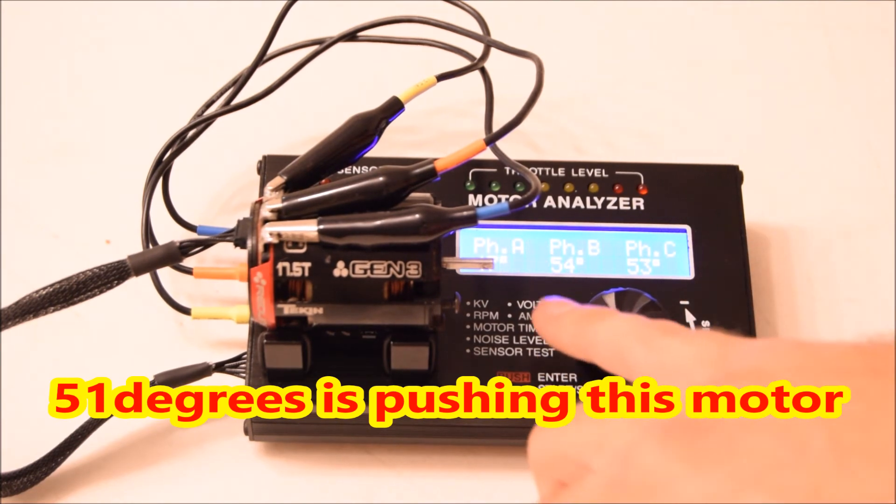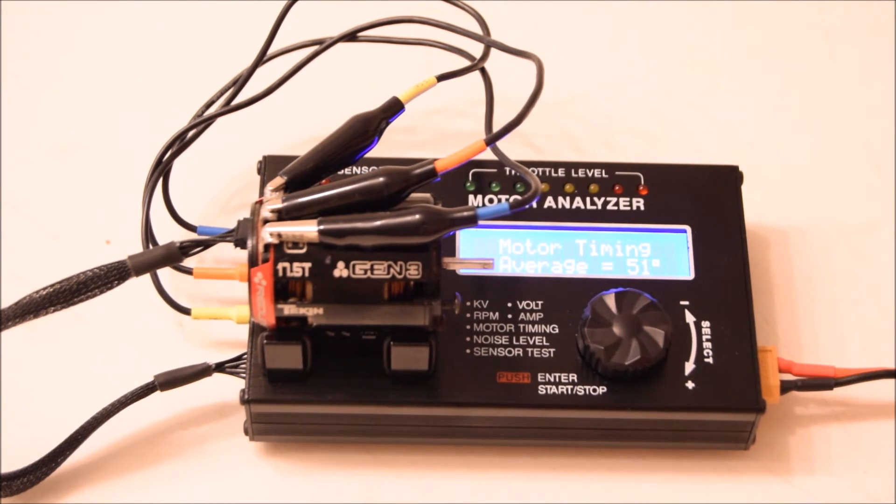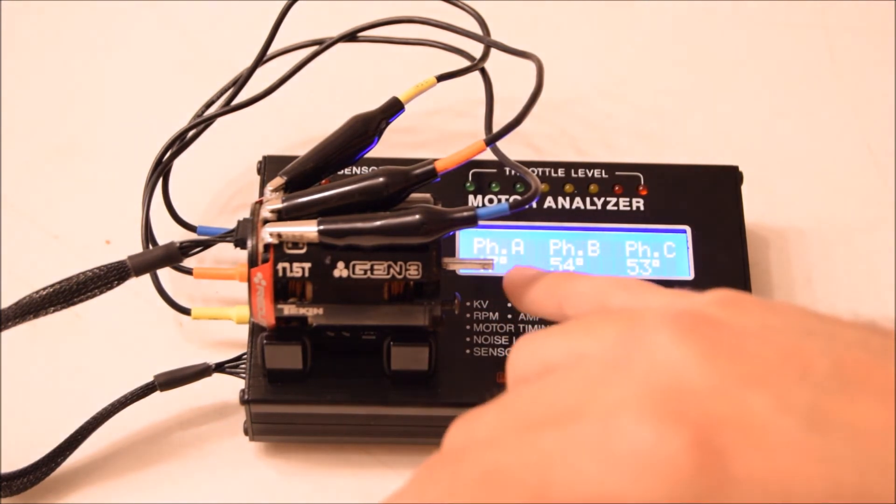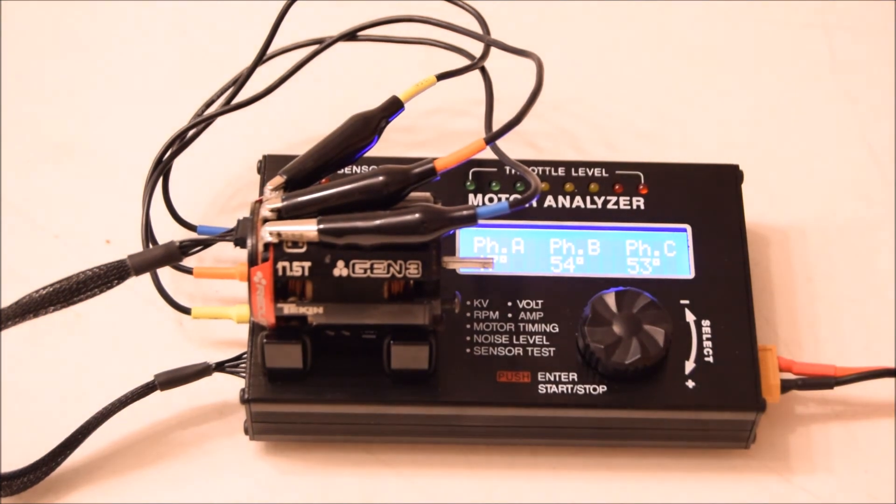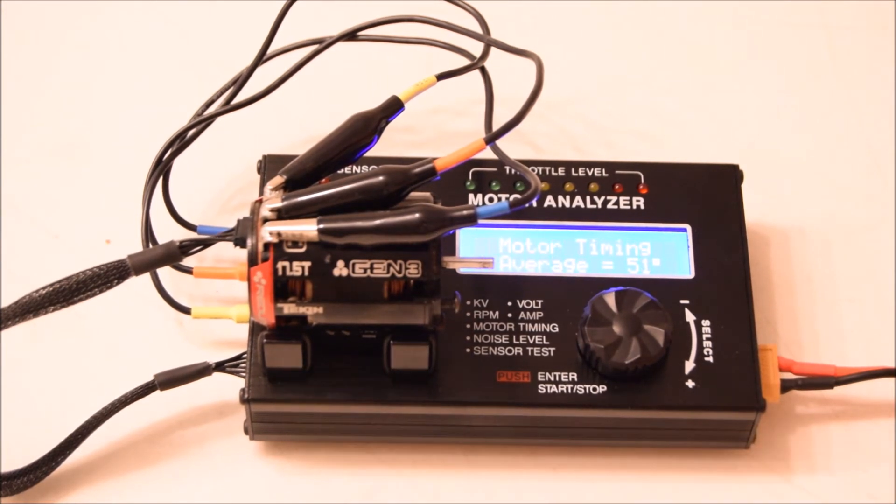Here we have the motor timing. It shows an average of 51 degrees, and it'll cycle through ports A, B, and C—where you plug in the motor. It's 47, 54, 53. So B and C are pretty close together, A not so much. That means the soldering at the end bell of the motor was probably not the best.